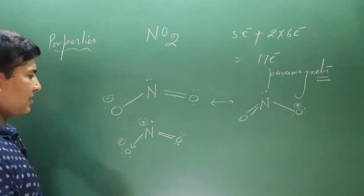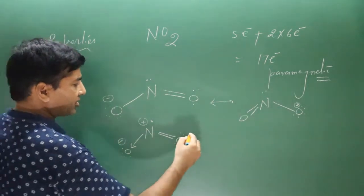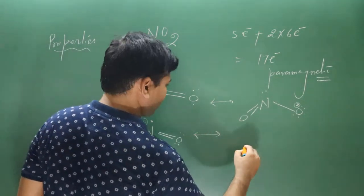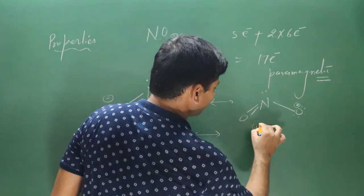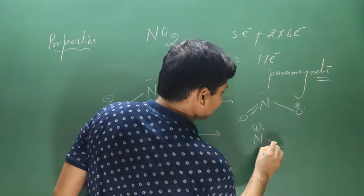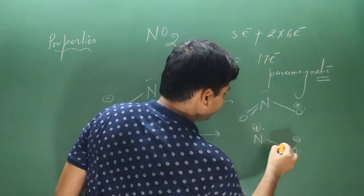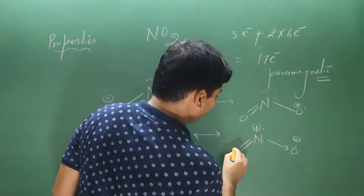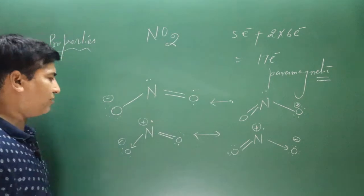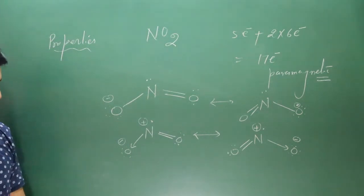It is part of resonance: double bond–single bond with nitrogen carrying positive charge and one oxygen carrying negative charge. These are the resonating structures of nitrogen dioxide — one showing only covalent bonds and one showing both covalent and coordinate bonds.